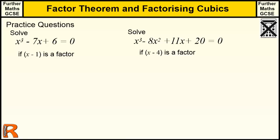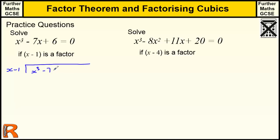I'm going to show you both methods for this, so don't worry which method you use. Let's start with the standard division method: x minus 1 into x³ minus 7x plus 6. Now this one doesn't have an x² term — that may cause problems, it may not. Let's have a look.